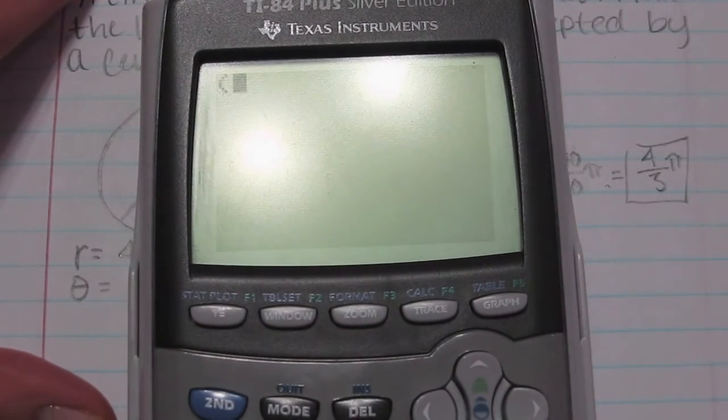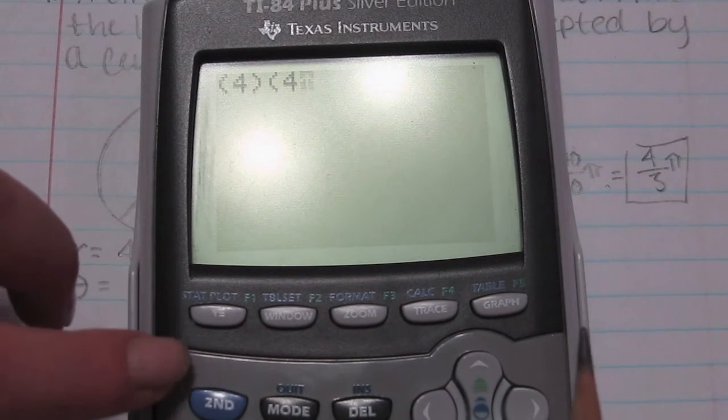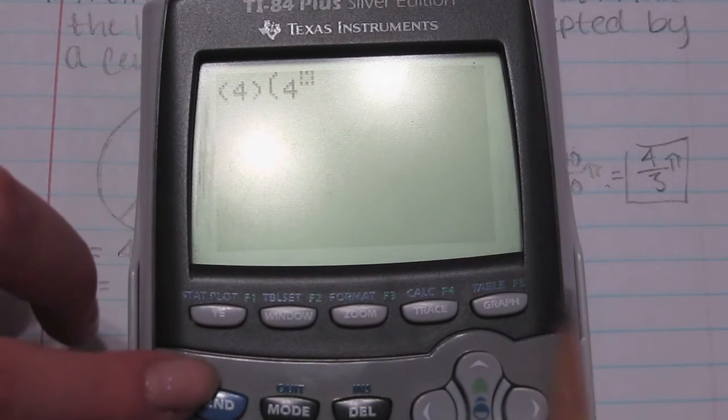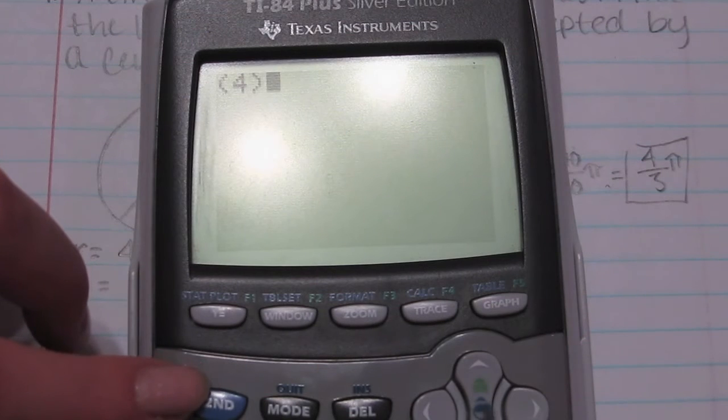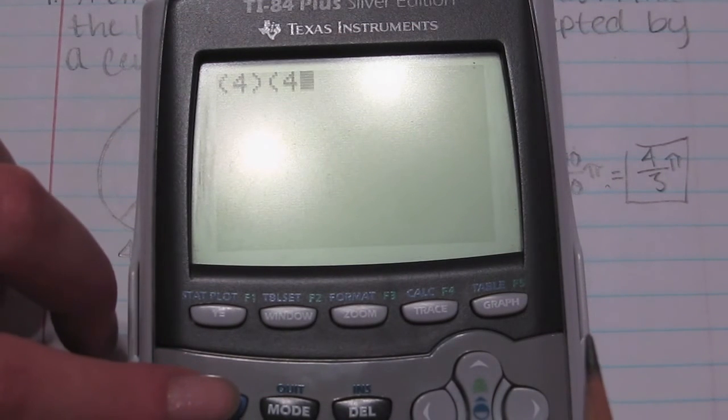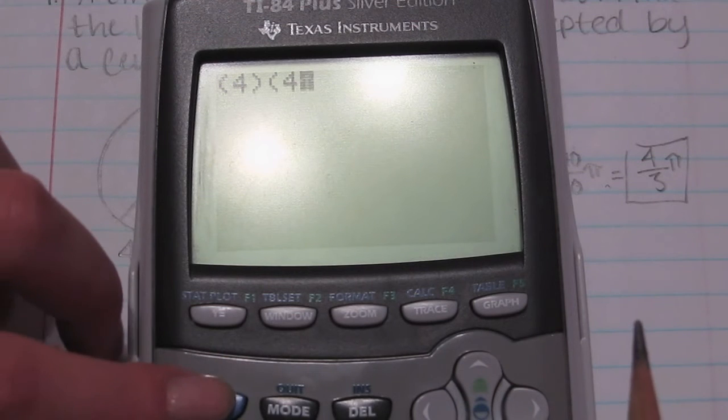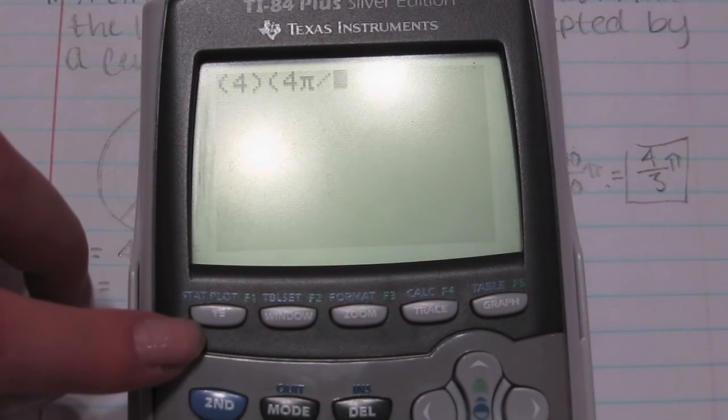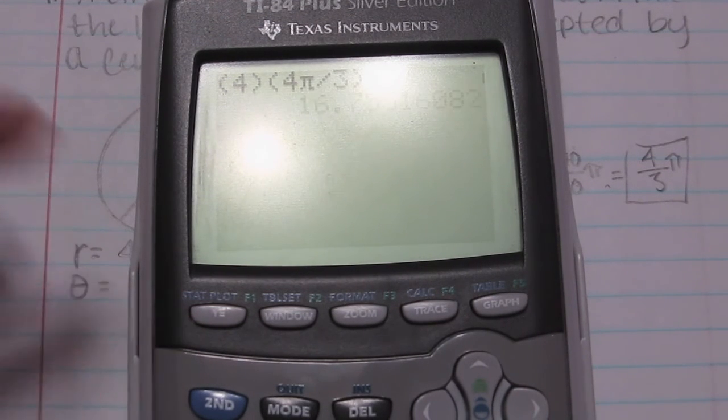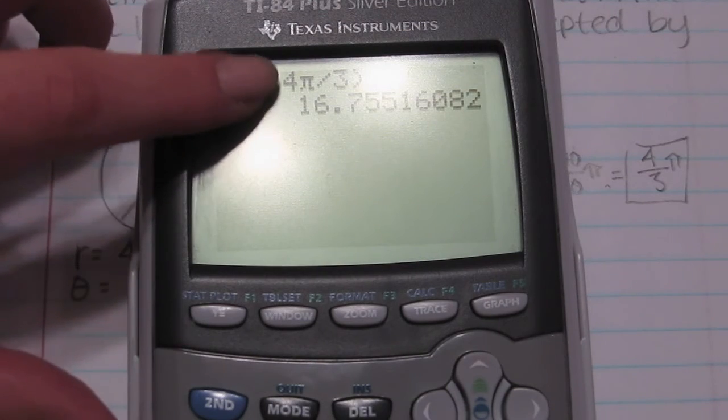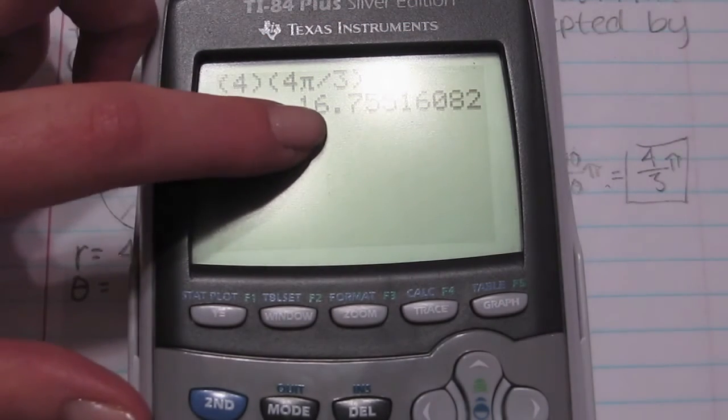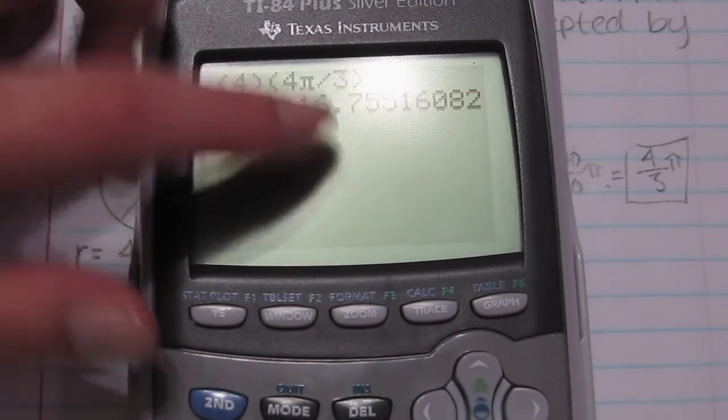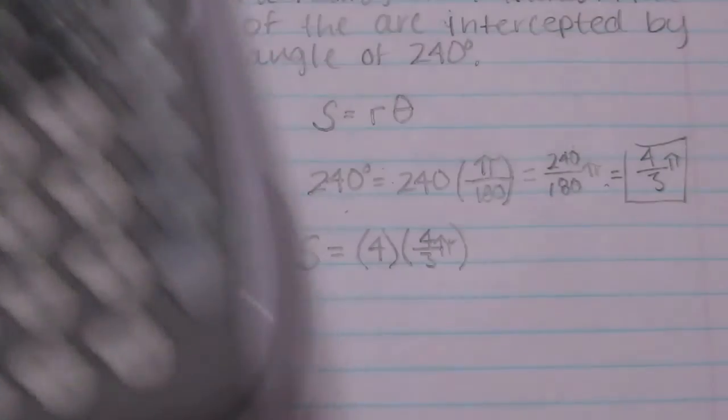So we're going to multiply 4 by 4 pi divided by 3. And the estimate is 16 point, we'll round it to two decimal places, so 16.76 inches.